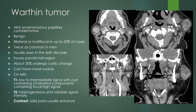Next we have the Warthin tumor, aka lymphomatous papillary cystadenoma. These are also benign, and in up to 20% of cases can be bilateral or multifocal. These are more common in men, usually in the sixth decade, and they favor the parotid tail region. About 30% undergo cystic change and can have a mural nodule. On MRI, these lesions tend to demonstrate low to intermediate T1 signal; cysts can have cholesterol components giving higher T1 intensity. On T2, they are heterogeneous with variable signal, and the solid parts usually enhance. When you have bilateral parotid gland lesions, statistically they are more likely to be Warthin's tumors.